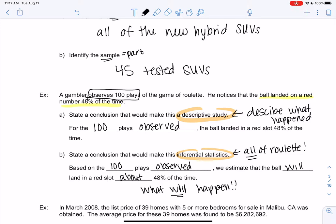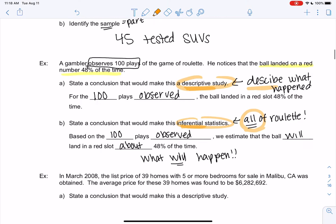Descriptive is describing. Inferential is then all, right? Making a bigger conclusion. We only witnessed 100, but we make a conclusion about all.